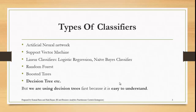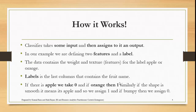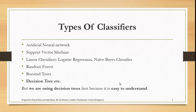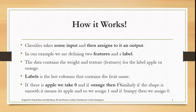There can be a number of classifiers: artificial neural network, support vector machine, linear classifier, logistic regression, naive Bayes classifier, random forest, and boosted tree. Since we are starting from the beginning, the decision tree is very easy to understand and interpret. There are many other advantages of decision trees, but the most important thing is it is very easy to understand and interpret, as you will see at the end of this video.